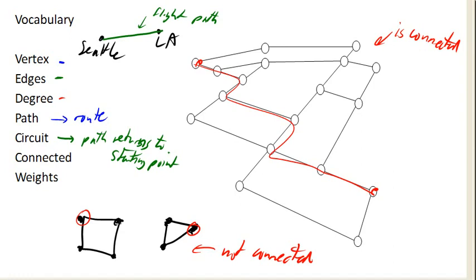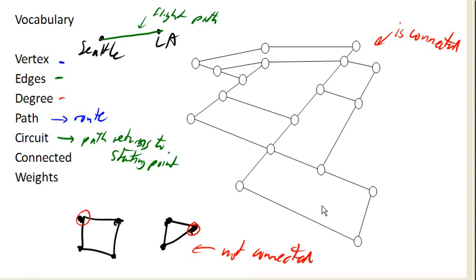Lastly is the idea of weights. Sometimes all we care about is the fact that there is a connection between two locations, like with our bridges. But in a case like walking these paths, we might be interested in the length of these paths — in which case we might say that this is 100 feet and this is 200 feet. Those would be weights, or a length, or a cost associated with the edge. In the case of our flight path, there might be a flight cost associated with that path, and that would be the weight on that edge.